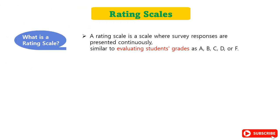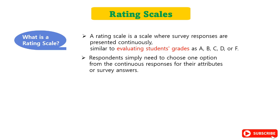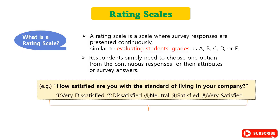A rating scale is a scale where survey responses are presented continuously, similar to evaluating students' grades as A, B, C, D, or F. Respondents simply need to choose one option from the continuous responses for their attributes or survey answers. An example of a rating scale: 'How satisfied are you with the standard of living in your company?' with a five-point scale ranging from very dissatisfied, dissatisfied, neutral, satisfied, to very satisfied.